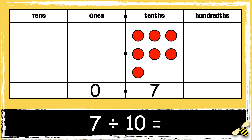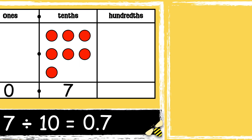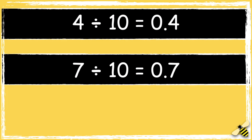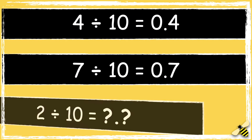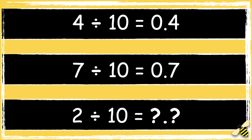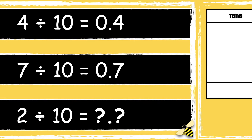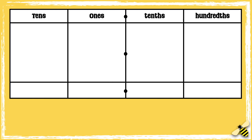So seven ones become seven tenths. We need to use zero as a placeholder to show that there are no ones, so the answer is 0.7. Now it's your turn — what is 2 divided by 10? Let me know your answer in the comment section.